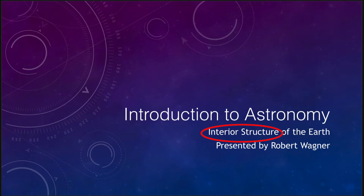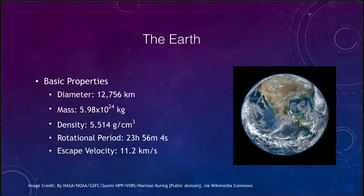So let's start off by looking at some basic properties of the Earth. The diameter is 12,756 kilometers. That would be the distance from one edge of the Earth to the other, straight across.